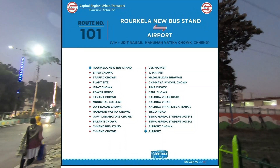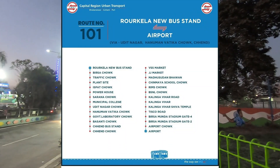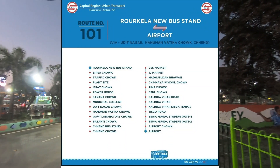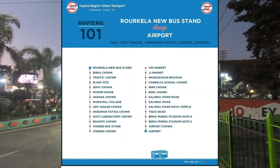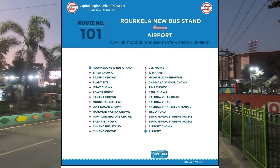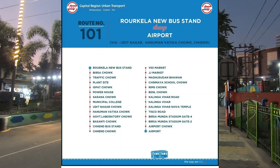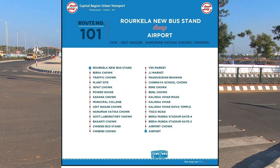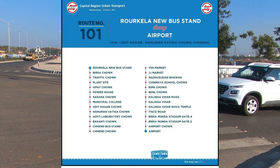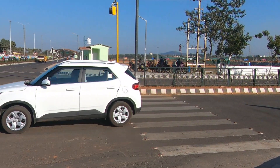Route number 101: Raurkela new bus stand to the airport and back. This bus runs via Udit Nagar, Hanuman Vatika Chowk, and Chhend Colony.